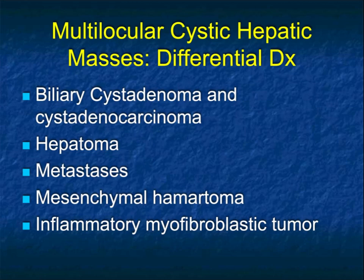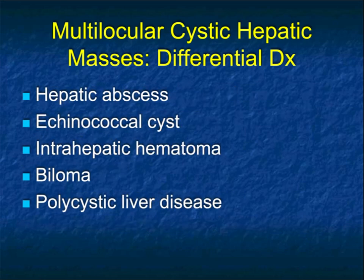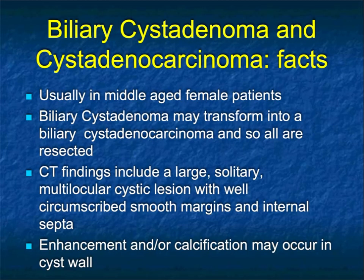Now let's look at what I'd call multilocular cystic hepatic masses from a differential diagnosis perspective. We'll talk about biliary cystadenomas and carcinomas, hepatoma, metastasis, mesenchymal hamartoma, and IMT — inflammatory myofibroblastic tumors — across the spectrum of malignancy and infectious and inflammatory processes, including hepatic abscess, biloma, and even polycystic liver disease.